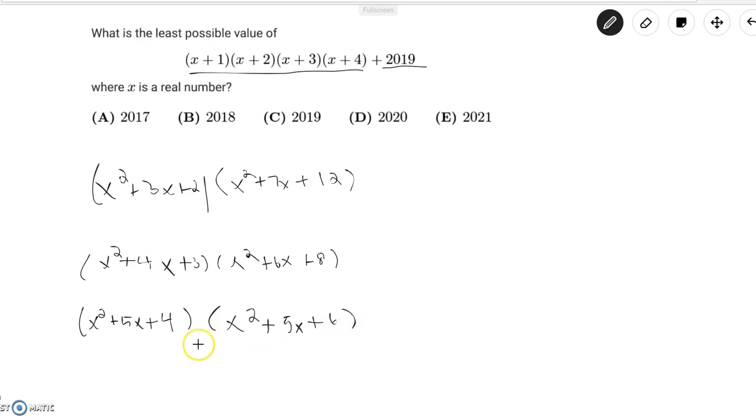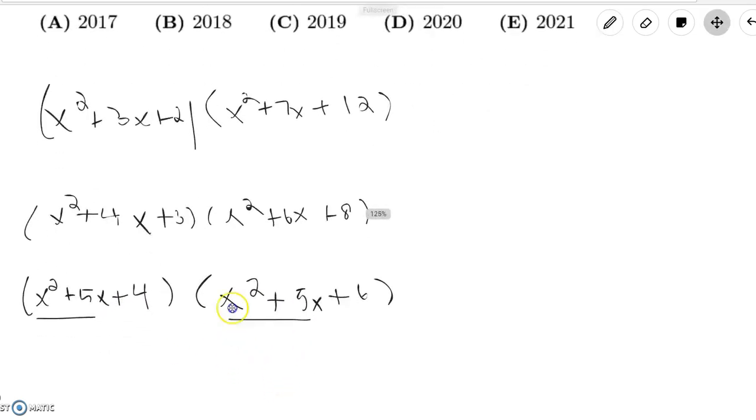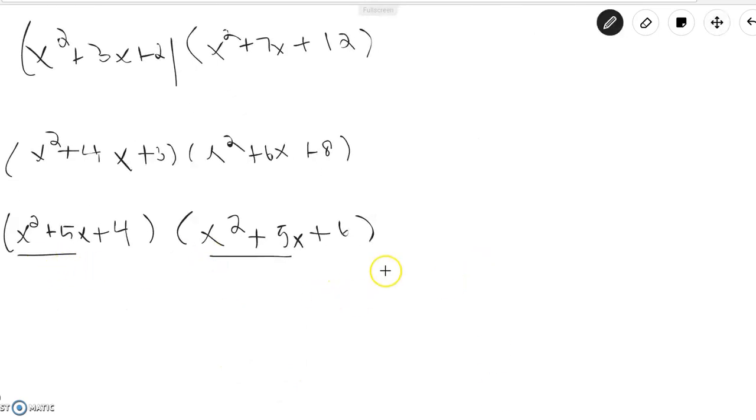This is good for us because both x² and 5x have the same coefficients in both terms. So what we can do is substitute x²+5x for a variable u.